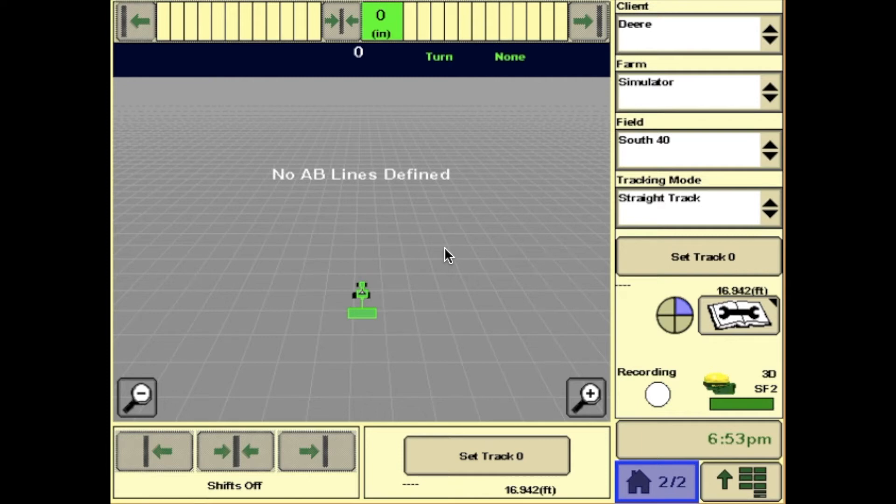When setting up your 2630, you will need to make sure you have measurements and offsets entered in for your tractor and implement.